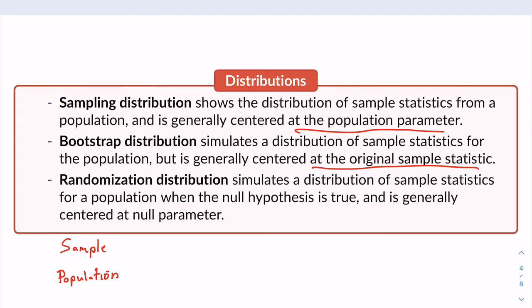The randomization distribution simulates a distribution of sample statistics for a population when the null hypothesis is true, and it's generally centered at the null parameter value. So this is also a sampling distribution — a sampling distribution for a specific parameter, where that parameter is the null hypothesis value. For example, if the null is a proportion equal to 0.5, the randomization distribution will be centered at 0.5. We've talked about how you could use a coin to create a randomization distribution. Once we move out of this section, we'll say goodbye to bootstrapping and randomization distributions, because we'll be looking into formula-based approaches to creating confidence intervals and hypothesis testing.